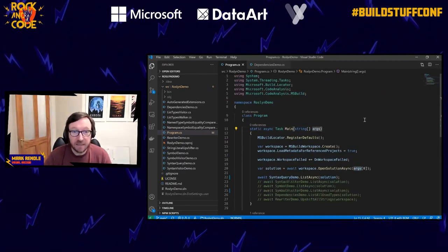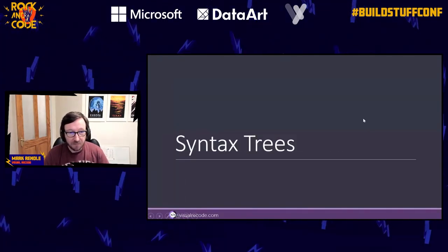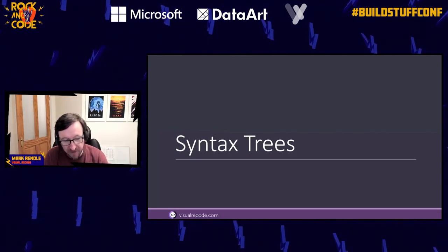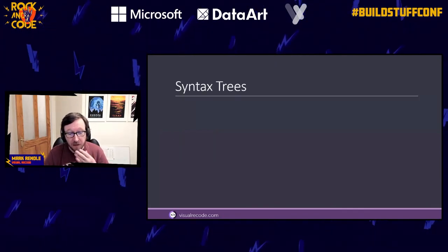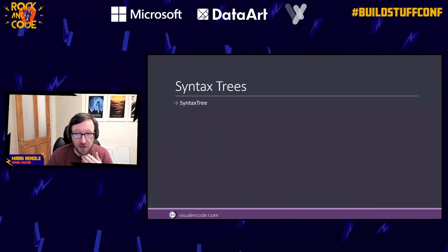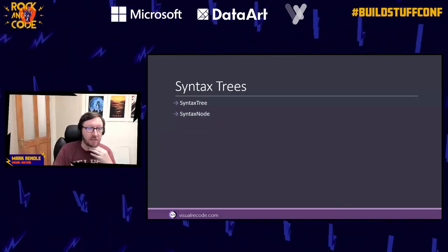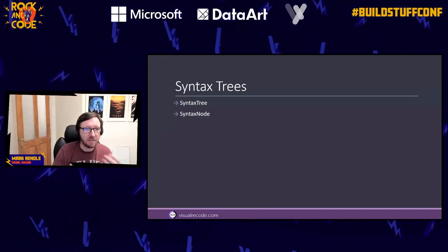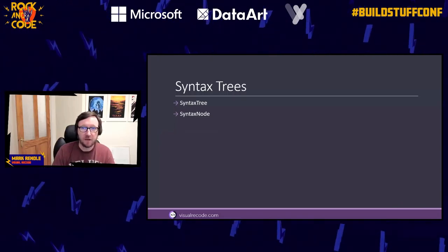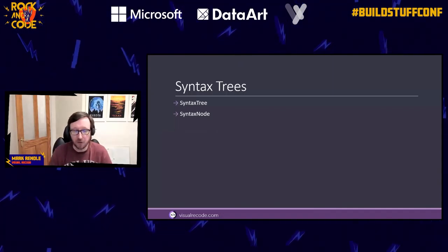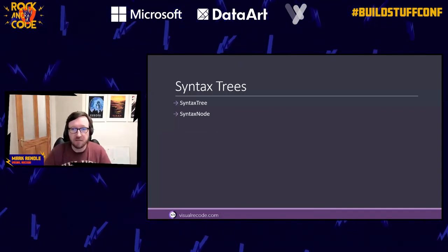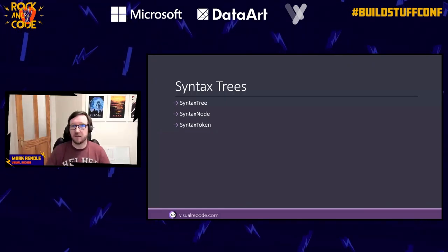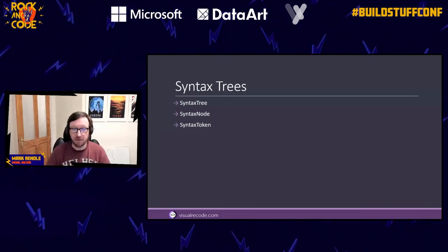Let's talk about syntax trees. Syntax trees are the lowest level interface that Roslyn gives you to look at code. At the base you have a SyntaxTree and a SyntaxNode. The syntax tree is an in-memory parsed tree; the syntax node is where the DOM of C# comes into play - nodes have child nodes, sibling nodes, and parent nodes. You can traverse through nodes using various techniques. Then you have syntax tokens - things like identifiers, keywords, braces, and parentheses.